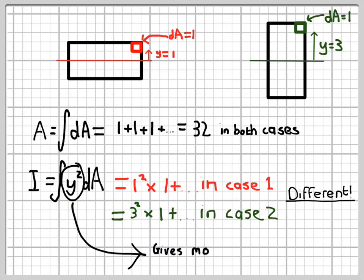And the key point is this y squared term in the definition, because it gives a lot more weight to material that is far from the axis about which we're bending. And so it's a measure of how dispersed about the axis the area is, rather than simply a measure of the area.